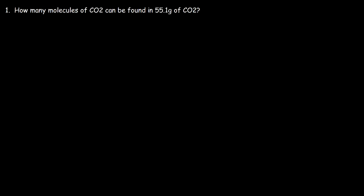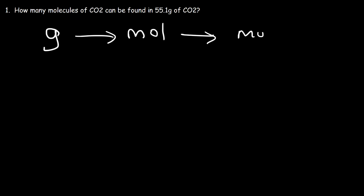In this video we're going to focus on converting grams to molecules and molecules to grams. So let's start with this example: how many molecules of CO2 carbon dioxide can be found in 55.1 grams of CO2? What you need to do is start with grams, convert it to moles using the molar mass, and then convert moles to molecules using Avogadro's number. That's the blueprint of what we're going to follow today.